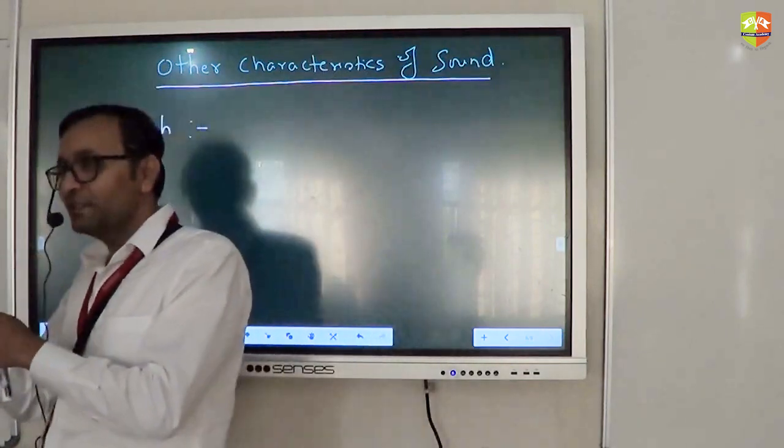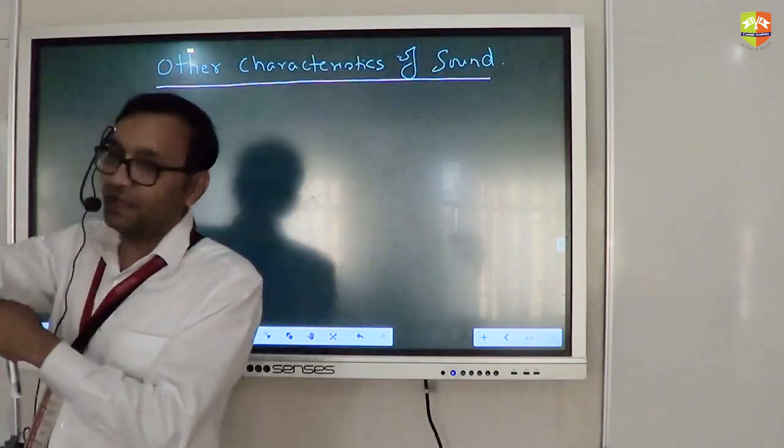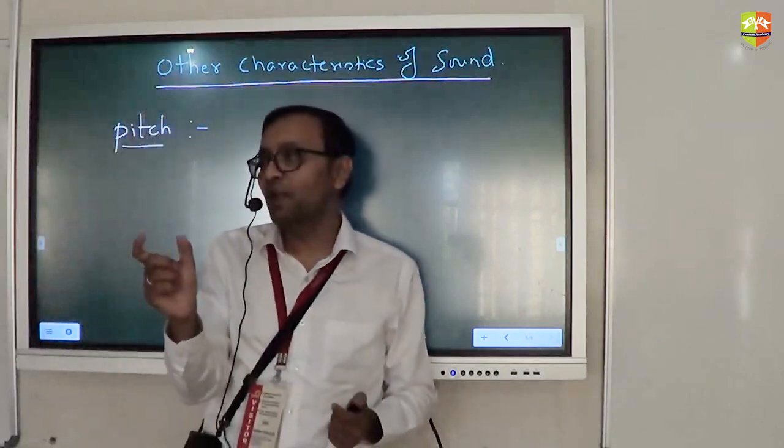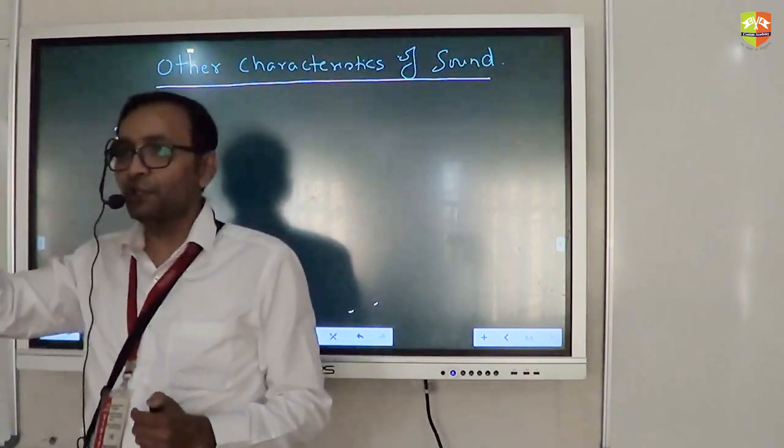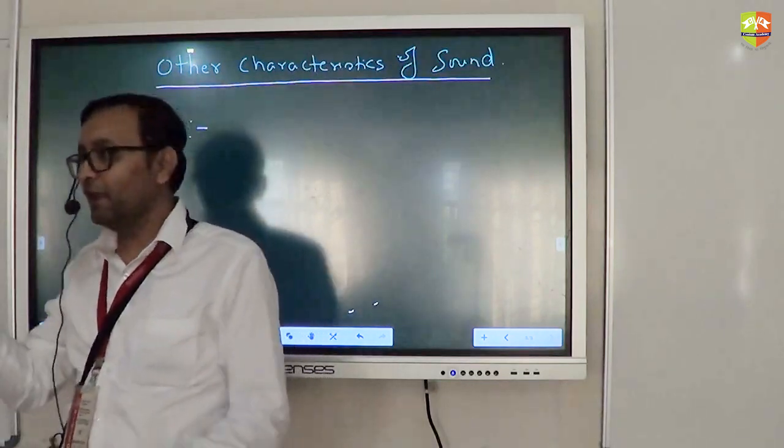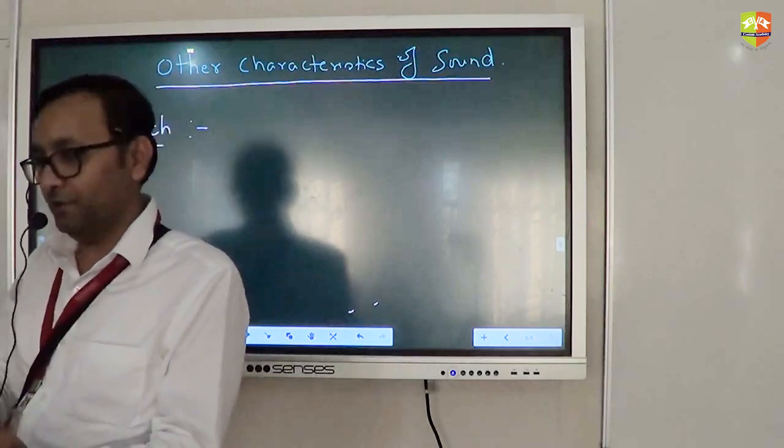So, higher is the frequency, the way the brain interprets means it is higher pitch. It is not a very precise definition. You can't put a number. Pitch is equal to 2.5. Because the way the brain interprets it, you can't put a number to it.